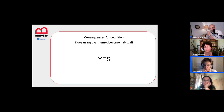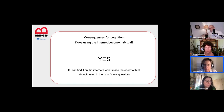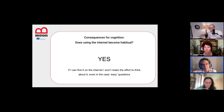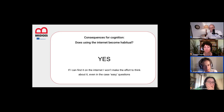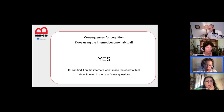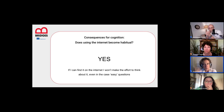So there are both costs and benefits to offloading information to the internet. Has internet use become habitual? The quick answer is yes: the tendency to search even for easy questions has become so habitual that people search the internet even when they actually know the answer — which is a risk, because there's a difference between searching for hard-to-find information and searching for something you already know.